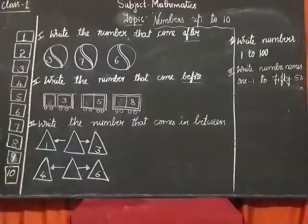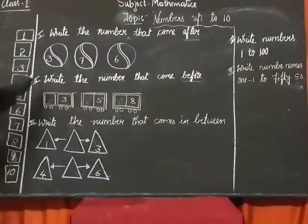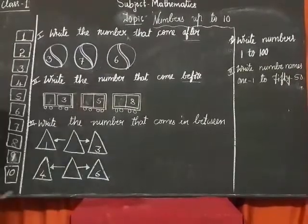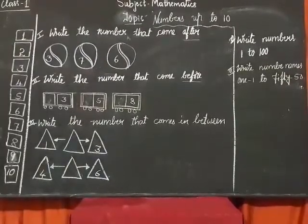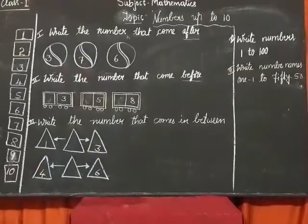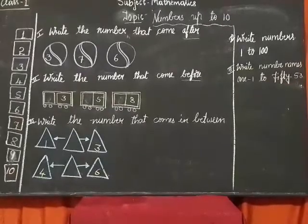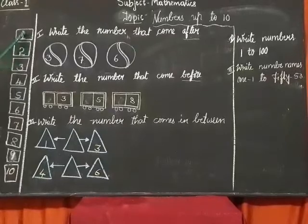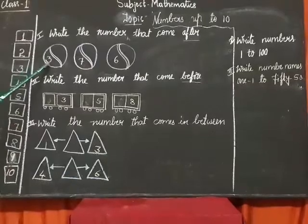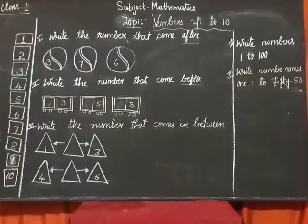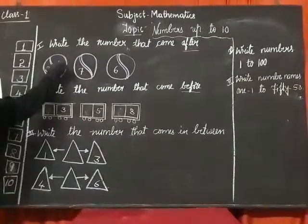Now, here are some balls. In the first ball, the number written is 3. What comes after 3? Let me check here: 1, 2, 3, 4. What comes after 3? 4. Very good. So we will write 4.